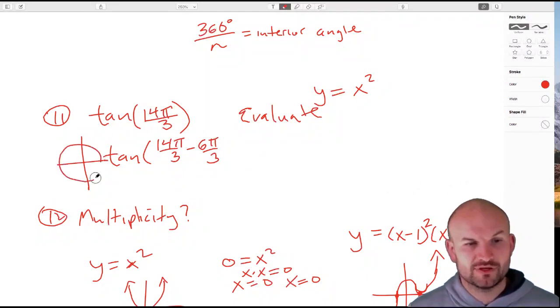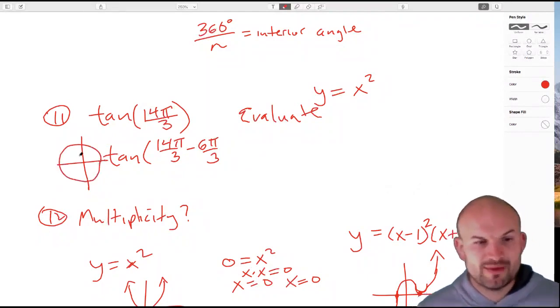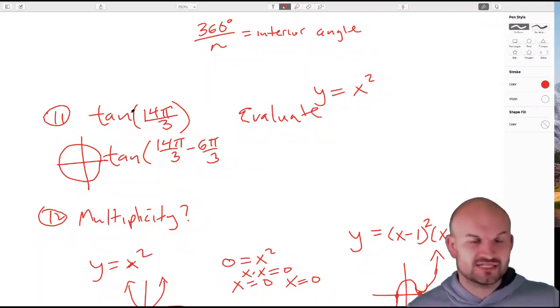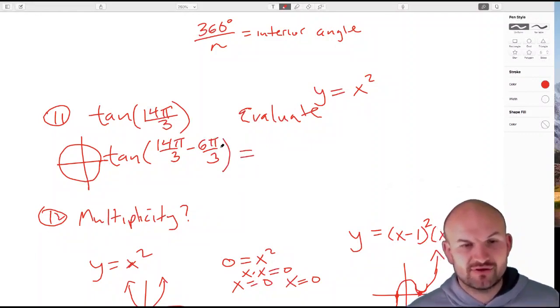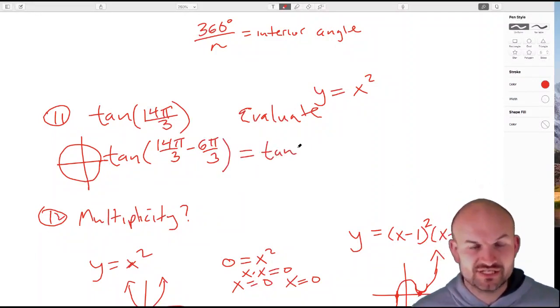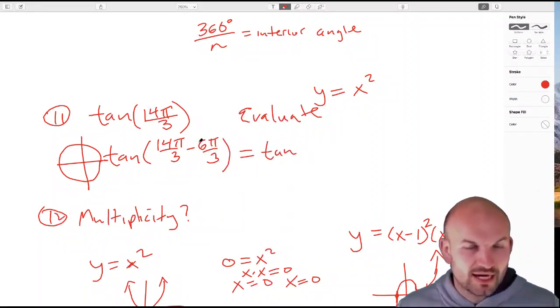No matter what my angle is, if I subtract 6π/3, that's going to take me to exactly where I started. So when I subtract 6π/3, that takes me to a tangent of 8π/3.